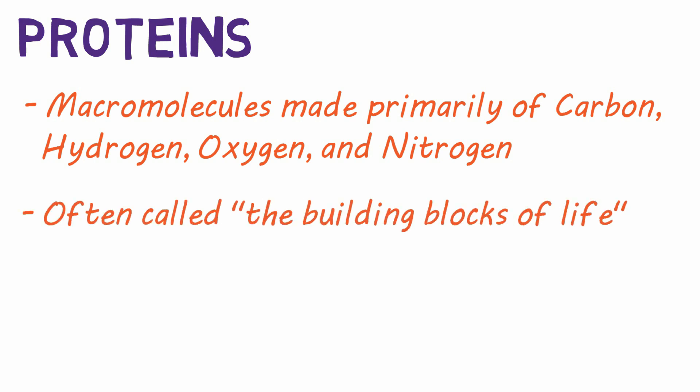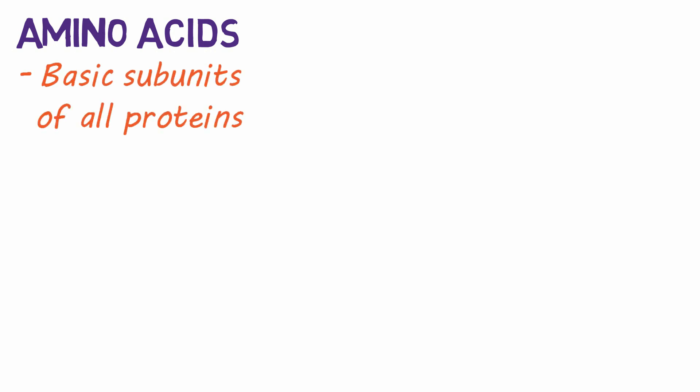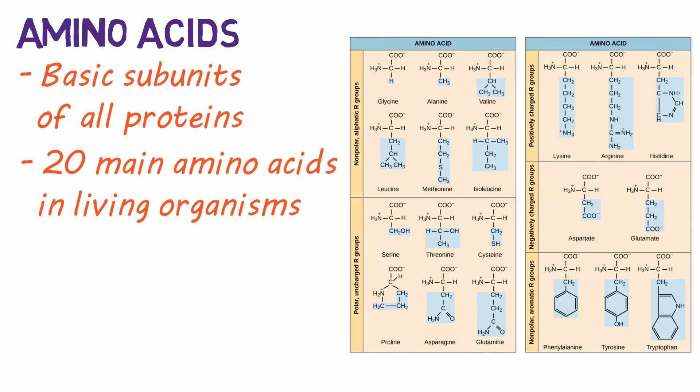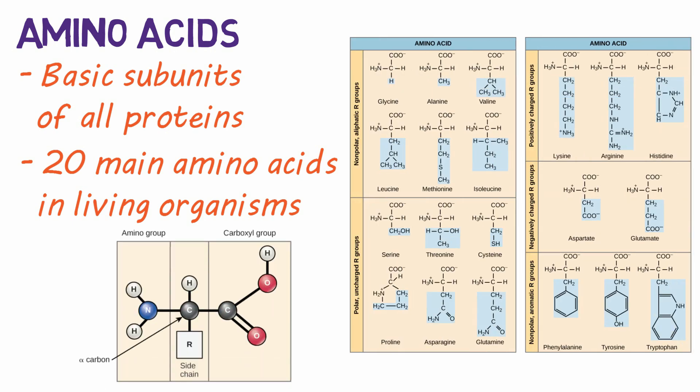Let's first talk about protein structure, and then we'll talk about many of their fantastic functions. The basic subunits for all proteins are called amino acids. There are 20 main amino acids in living organisms. These amino acids all have the same basic structure, with a carboxyl group and an amino group, but differ in their R group, or side chain.